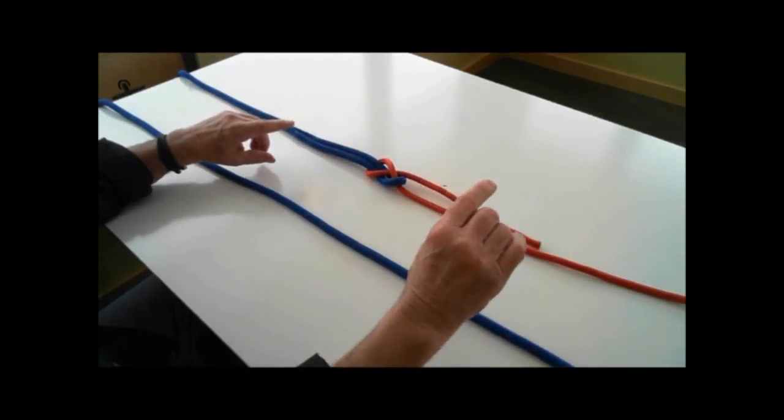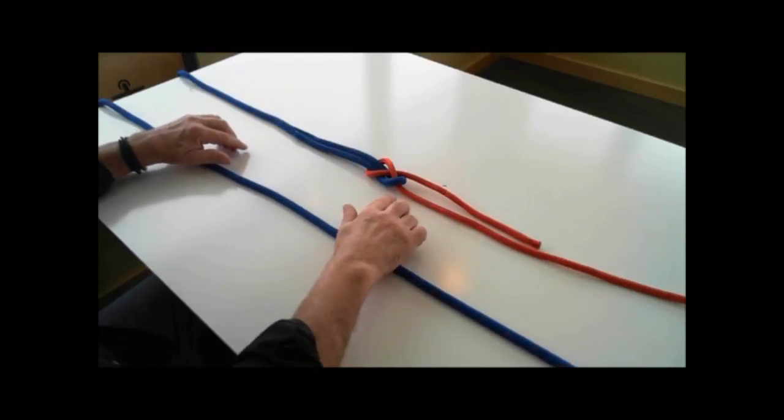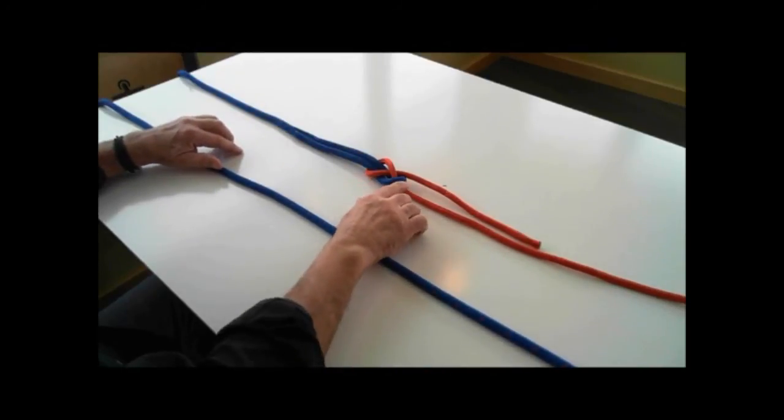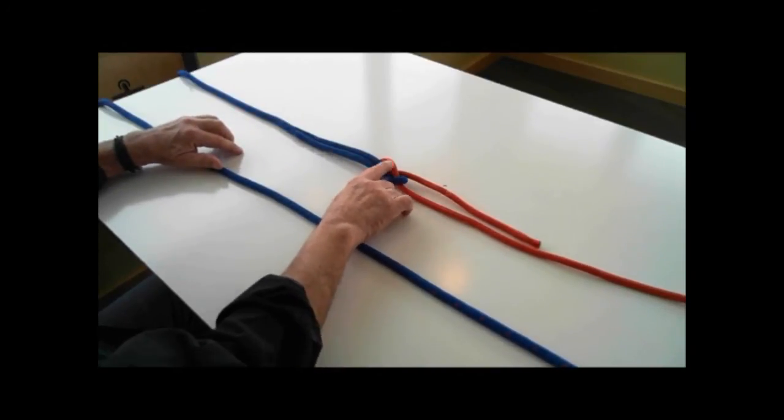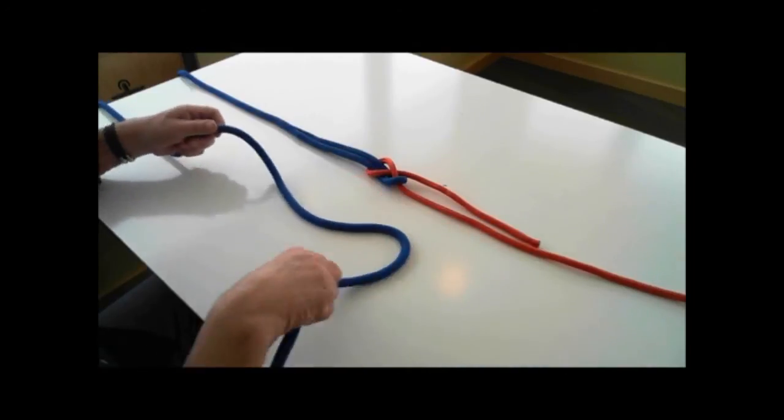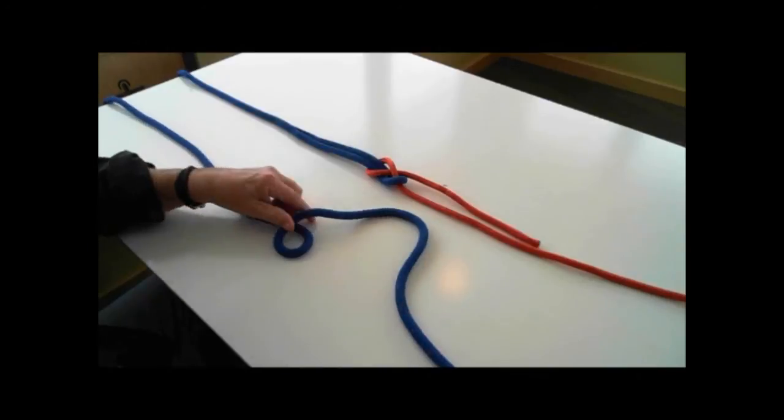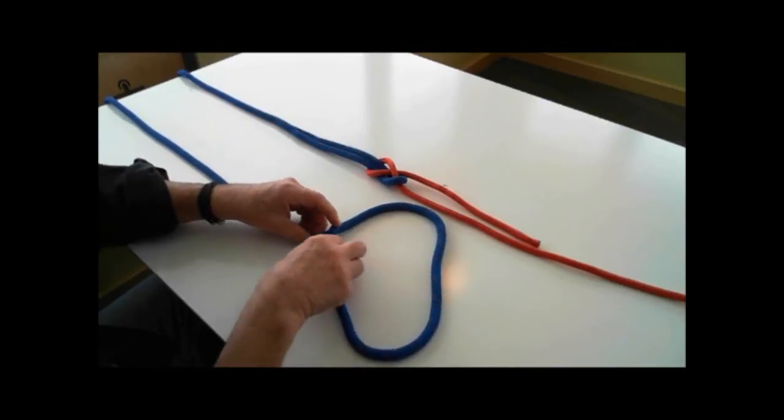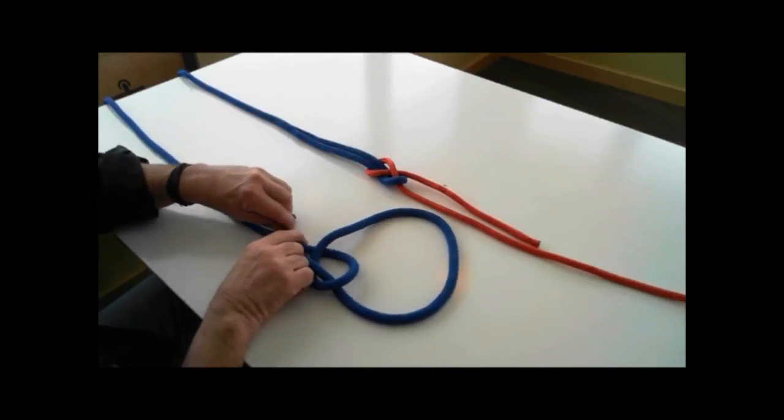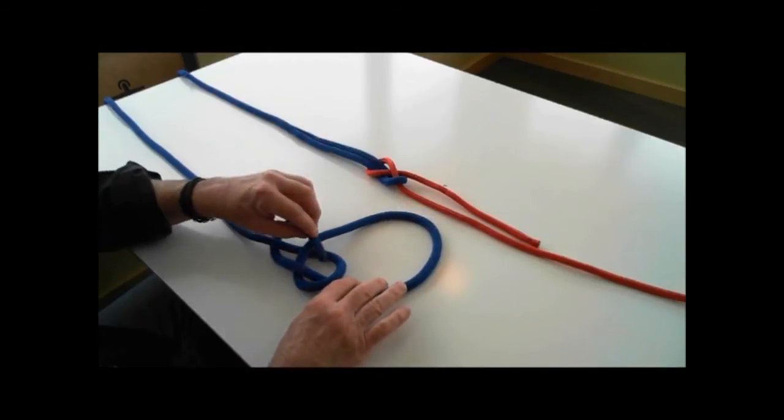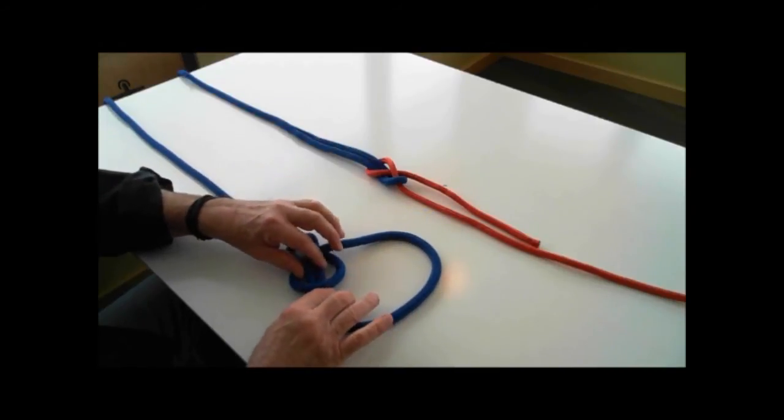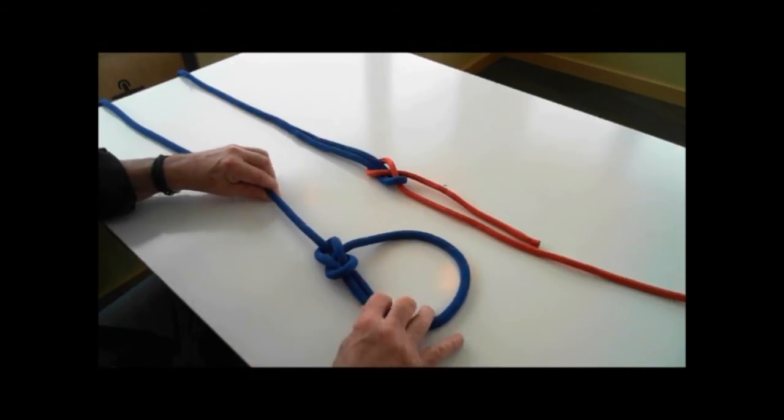Now to tie a bowline, we do it in reverse order. We tied a bite, a trap around a bite. This time we are going to tie a bite around a trap. So here is our trap. The rabbit comes out through the hole, goes around the back of the tree, and down the hole again. Do you see the bite forming through the trap? And we pull the trap close.